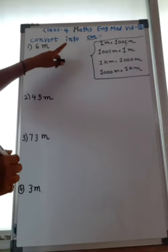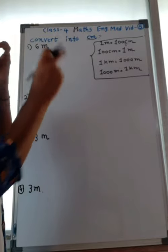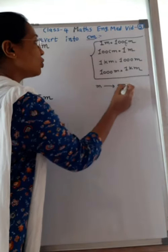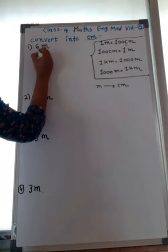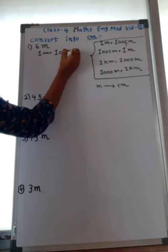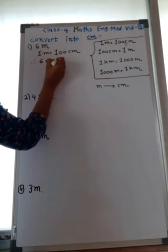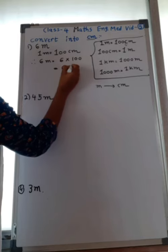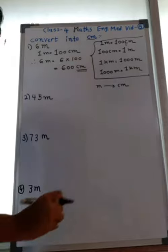Convert into centimeter. Here, 6 meter. To convert meter into centimeter, use the formula: 1 meter equals 100 centimeter. So, your question is 6 meter equals 6 multiplied by 100. The answer is 600 centimeter. Write the unit 'centimeter' — it is compulsory.